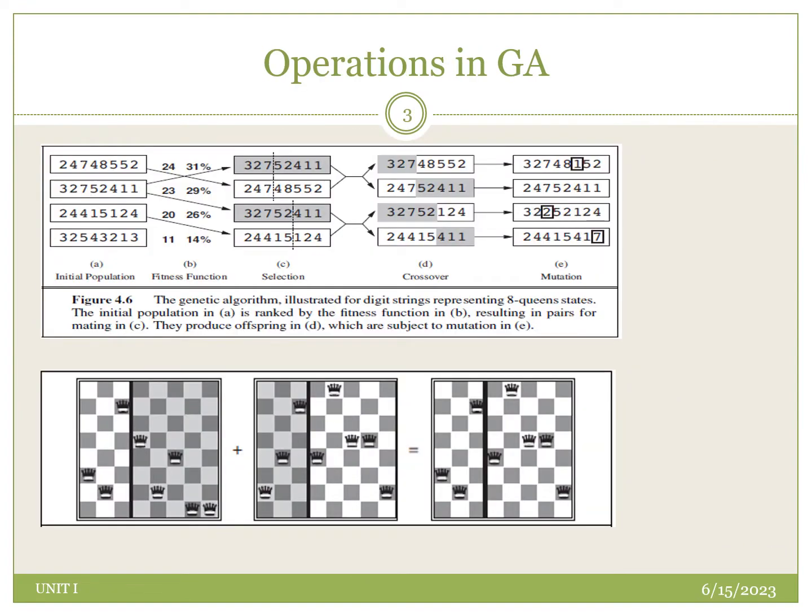Now let us apply this genetic algorithm to the eight queens problem. In the eight queens problem, we have to place all eight queens in eight different cells such that no queen is attacked by any other queen.